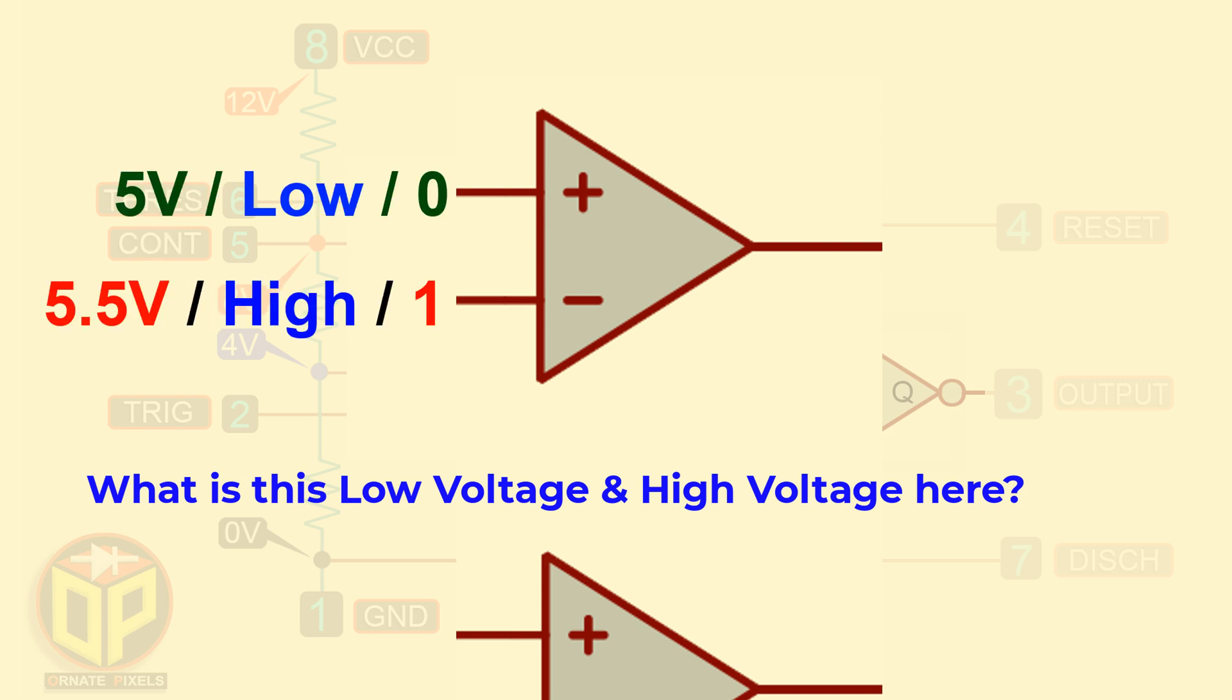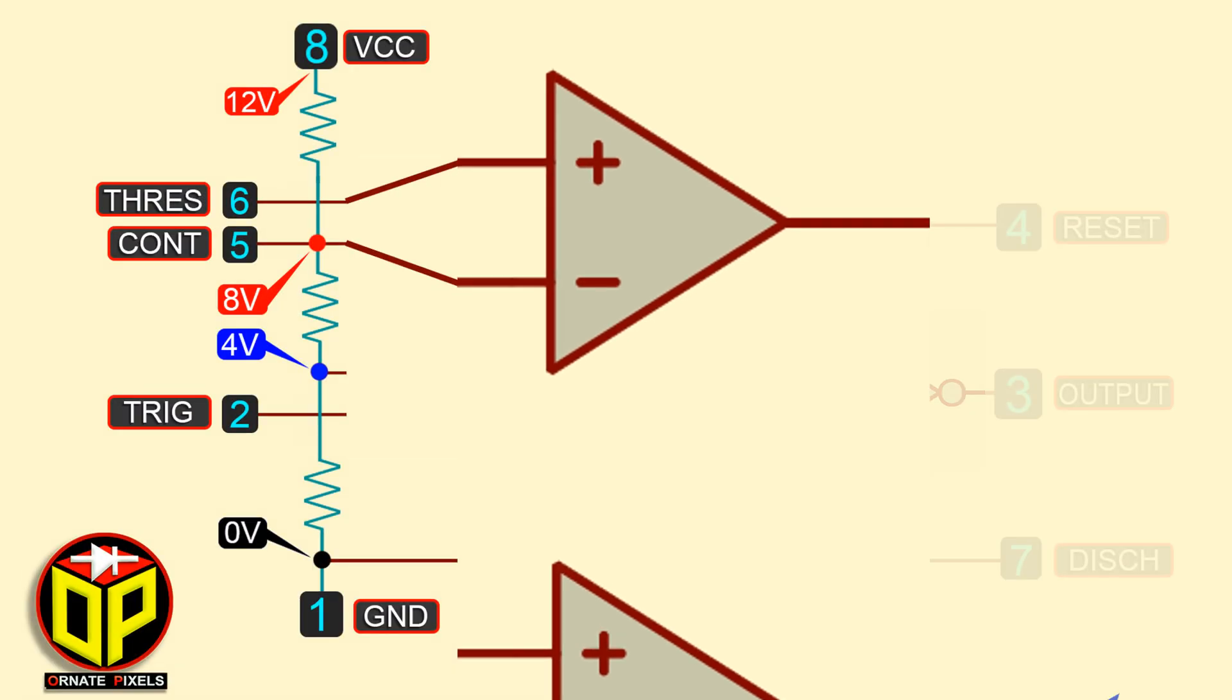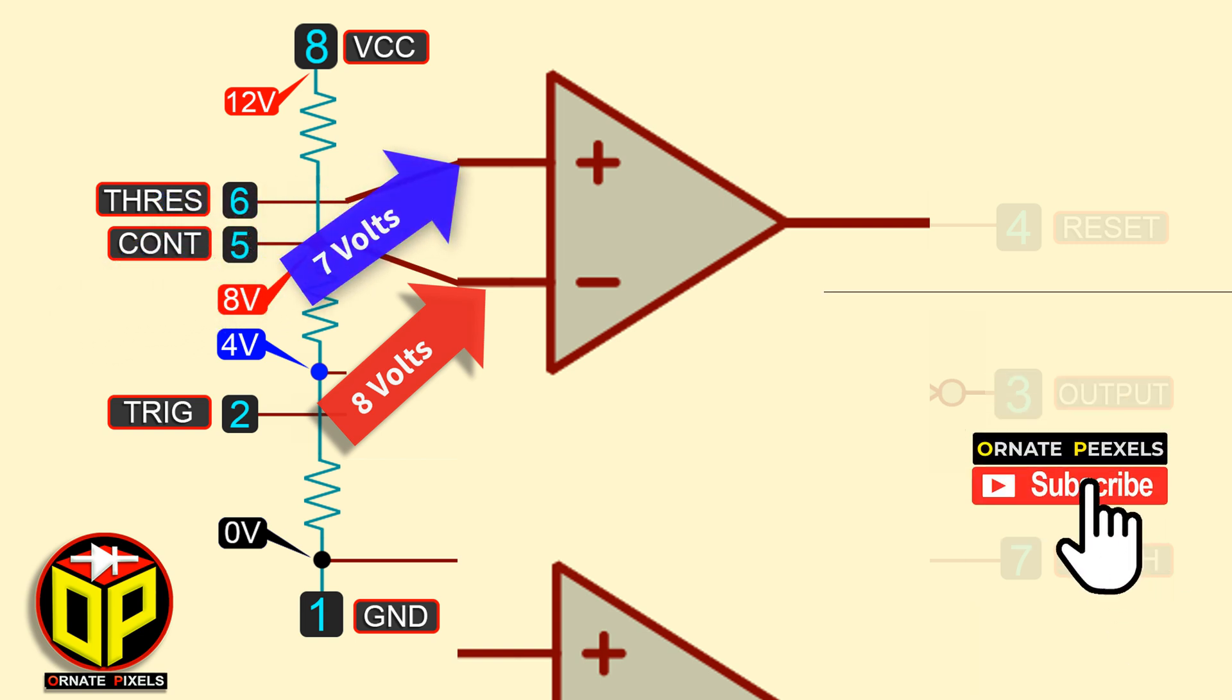Okay, now let's see the matter practically. This terminal has a reference voltage of 8 volts. So, the inverting terminal has 8 volts. Now, if we apply 7 volts to the threshold pin, the non-inverting terminal will have 7 volts.